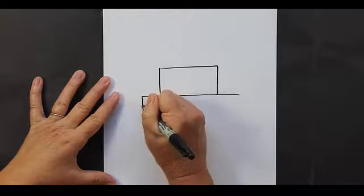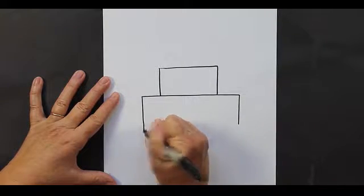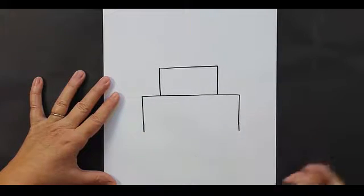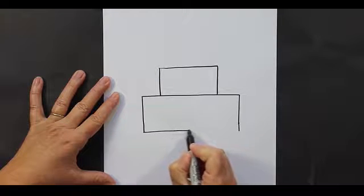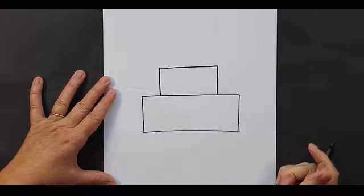We are going to make two more vertical lines. I'm going to make mine a little bit longer, and then we are going to close those up just like that. This is the body of your birthday cake.